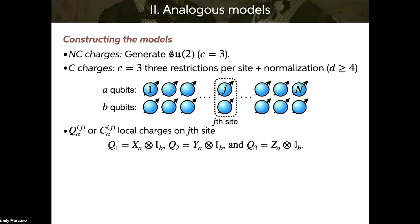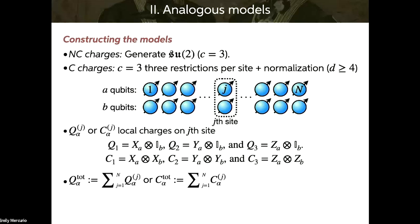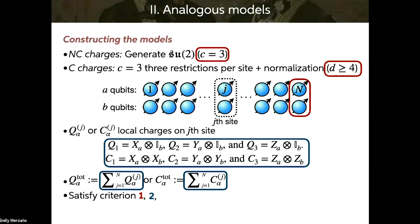For the non-commuting case, I have the Pauli matrices tensor the identity. In the commuting case, I have the Pauli matrices tensor themselves. So the Q's don't commute, the C's do. I then sum over these to get the global charges. We can check the first three criteria easily: same C, same D and N (first criterion); extensive charges by explicit construction; and all operators have the same eigenvalues.